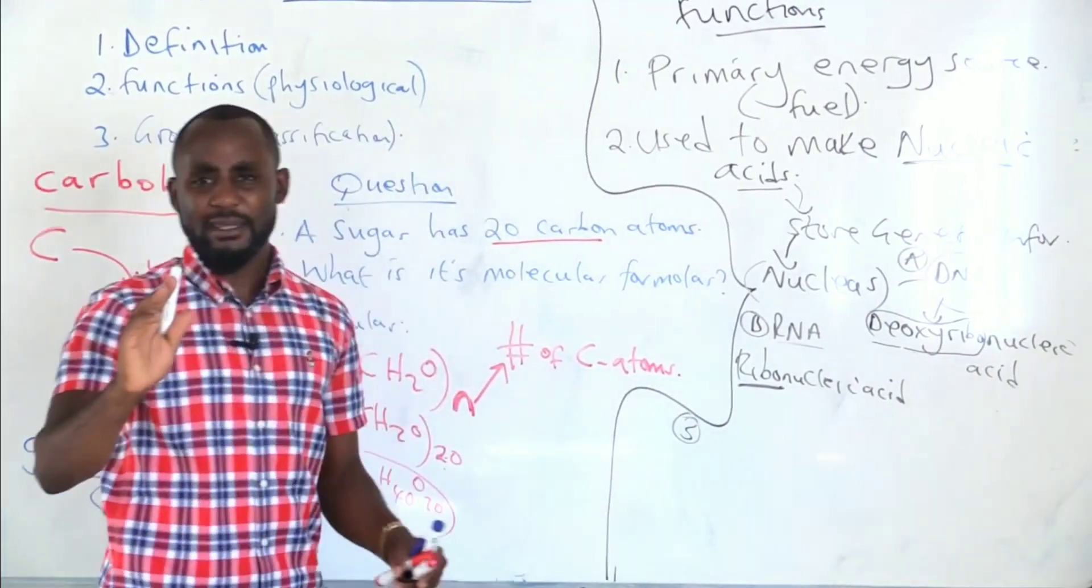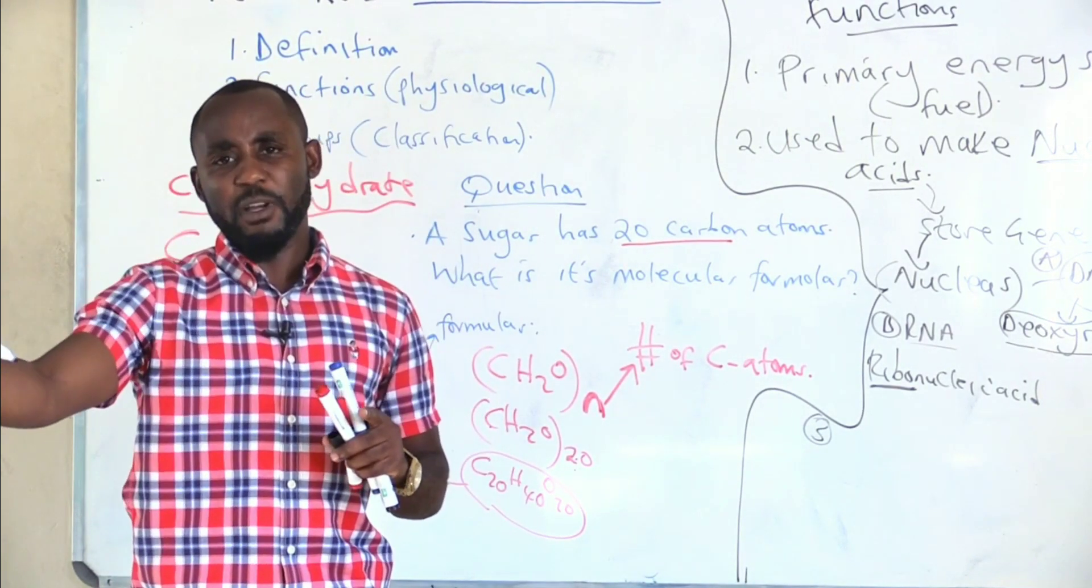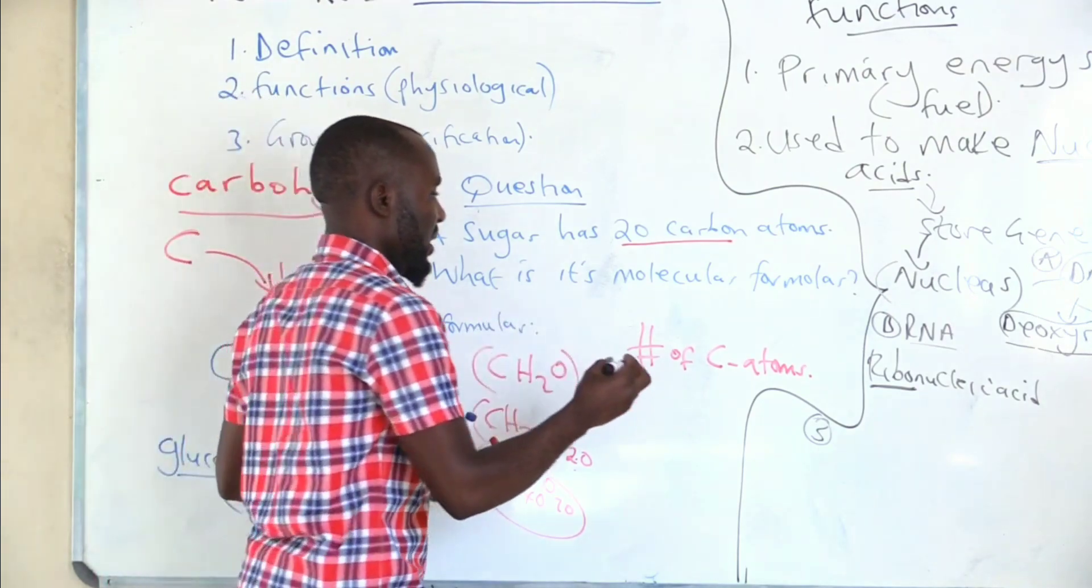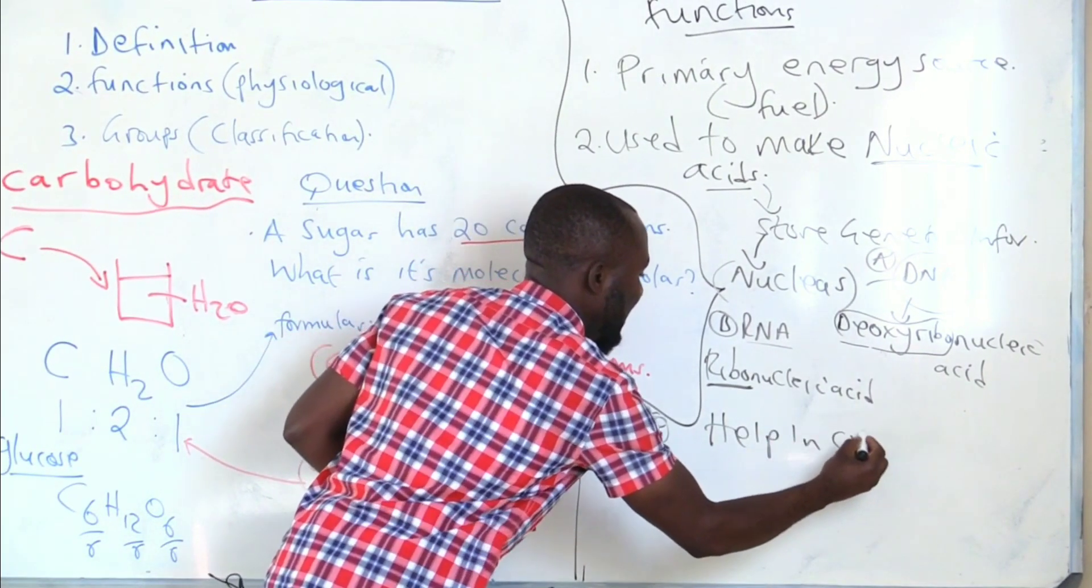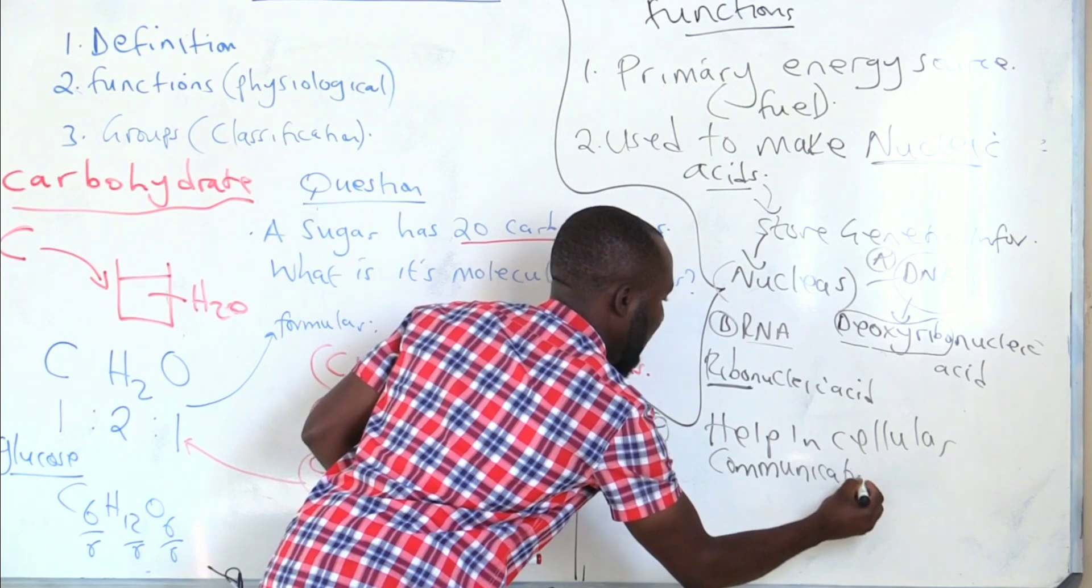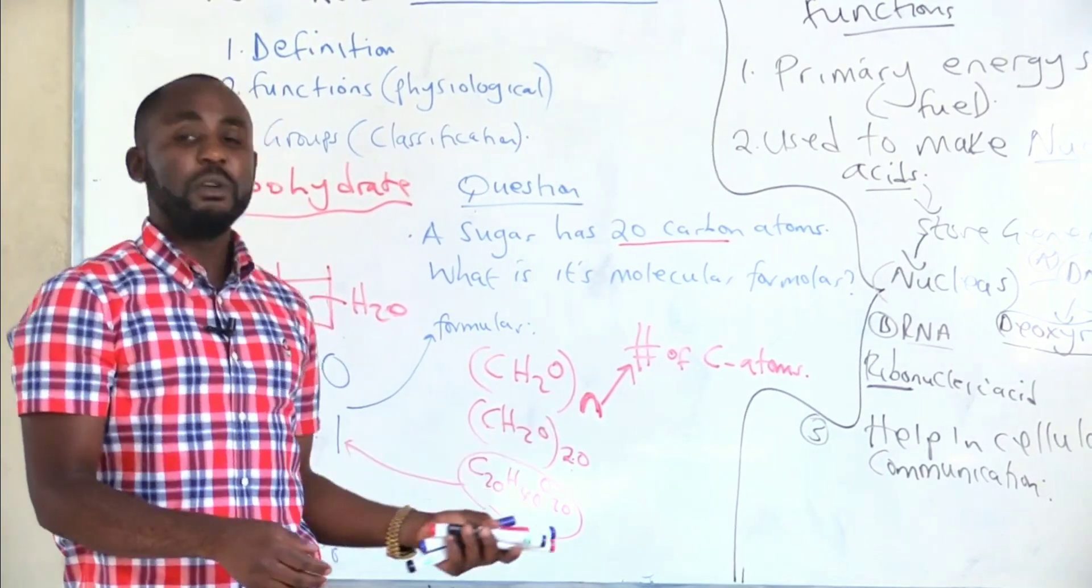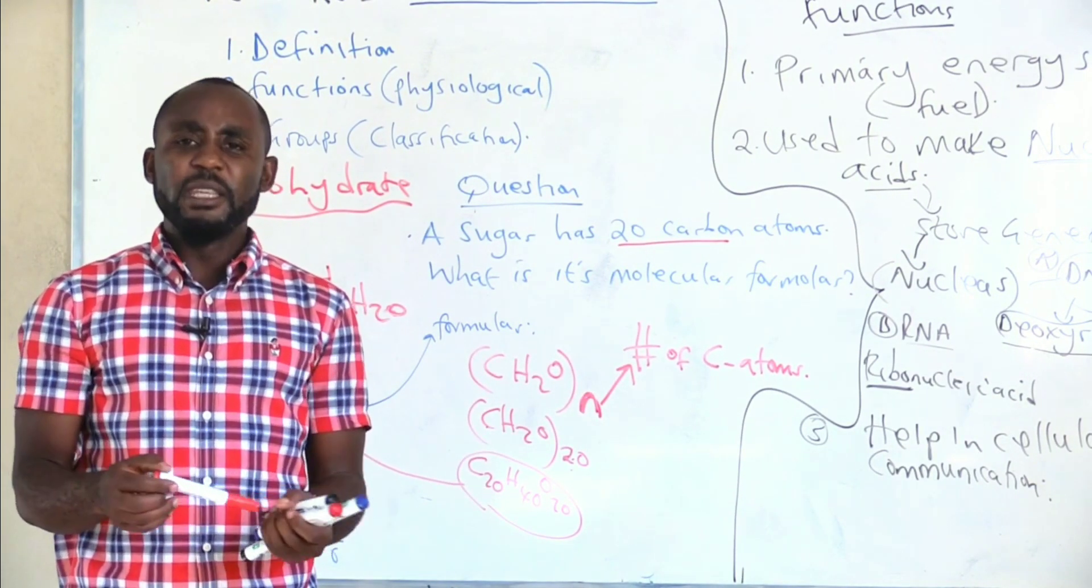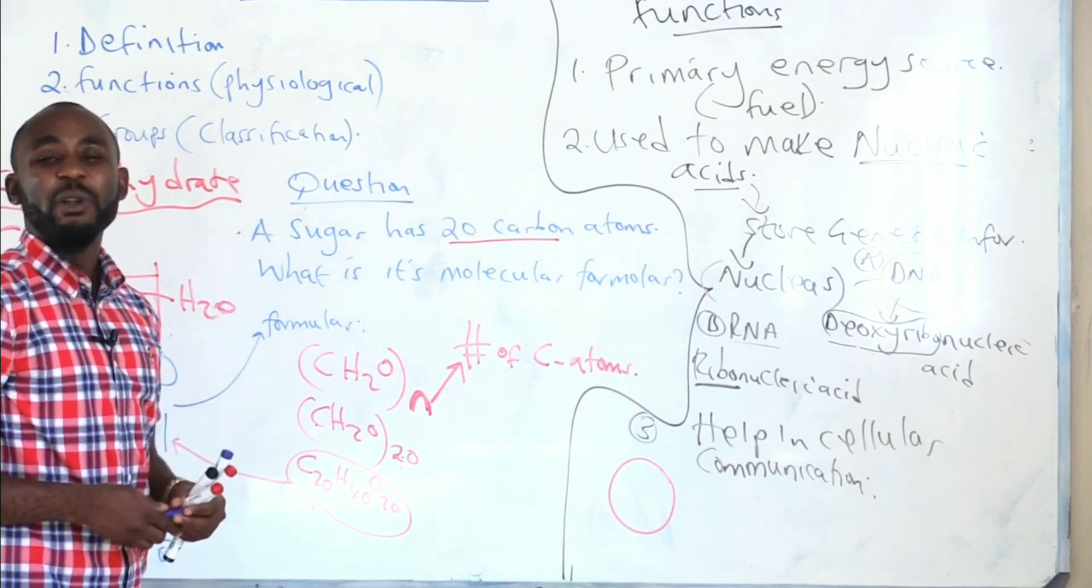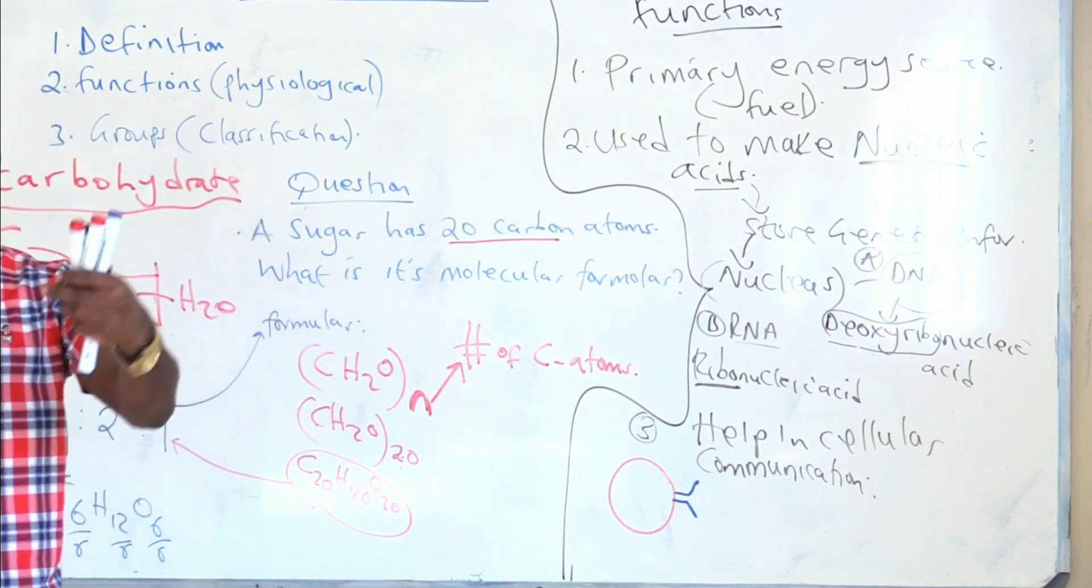The third function, and probably the last—but take note, it doesn't mean we have only three functions. As we progress, as we go to groups of carbohydrates, I will show you the other functions of carbohydrates. For now, the third and last function is carbohydrates help in cellular communication. To explain a bit on cellular communication, this is a topic you are going to cover fully in physiology. It simply talks about a cell, and this cell has got on its surface what is called cell surface receptors that receives information from outside.